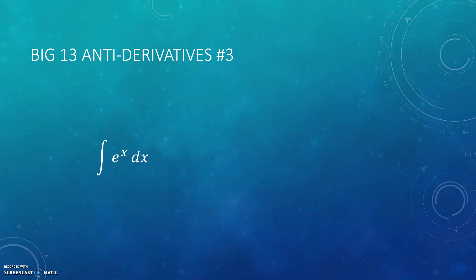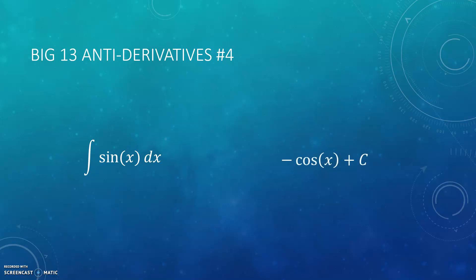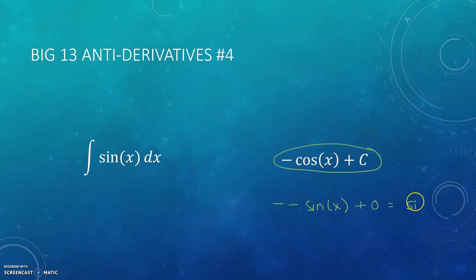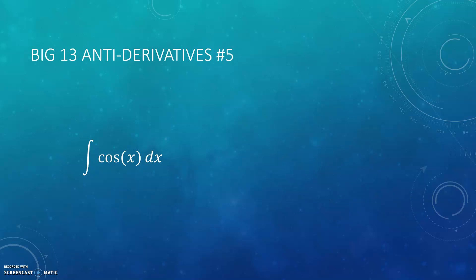Moving on, here are several more of the big 13. First, the antiderivative of e to the x — I hope this is not a surprise — it's e to the x plus C. Working backwards, the antiderivative of sine of x is negative cosine of x plus C. You can always check these by taking a derivative of the answer: the derivative of cosine is negative sine, so negative negative sine gives you sine of x. I hope you're getting that if you've memorized your derivatives, the antiderivative should be fairly straightforward.